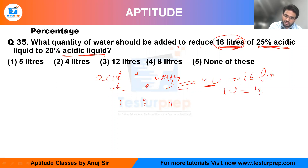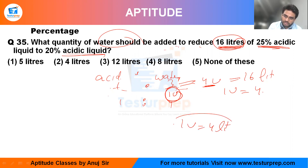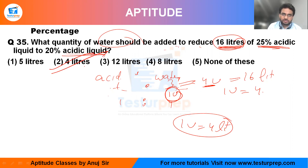They said further added water, and the further added water is only one unit. One unit is equal to four liters. So option number two should be the answer.